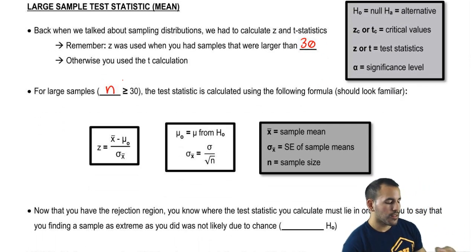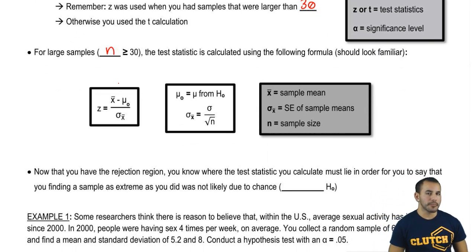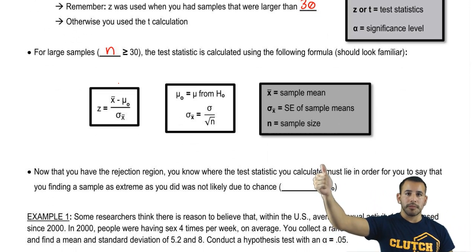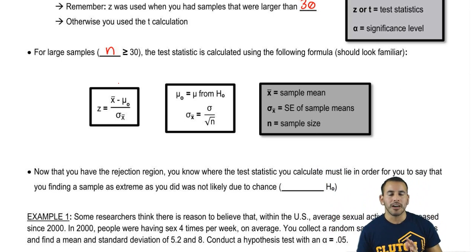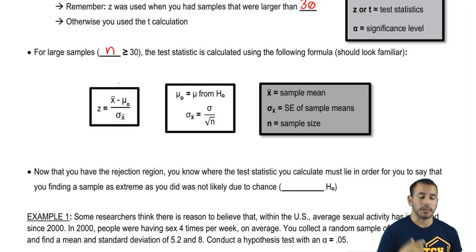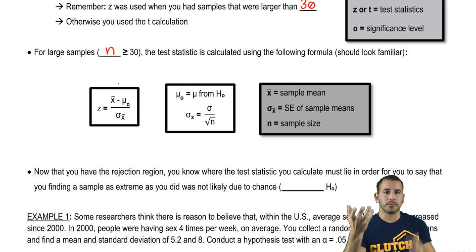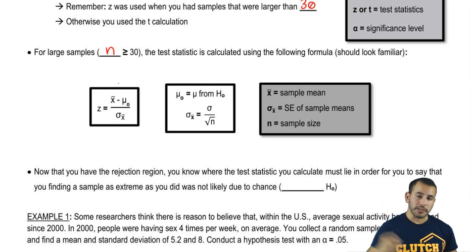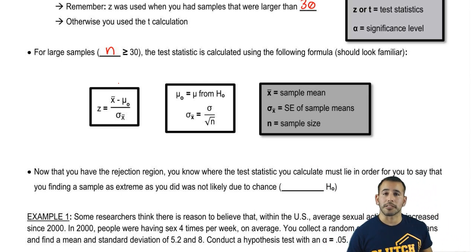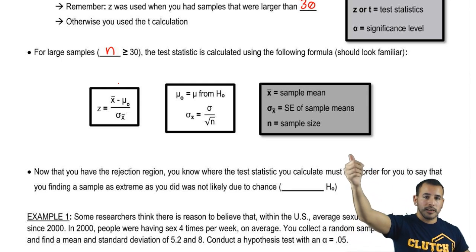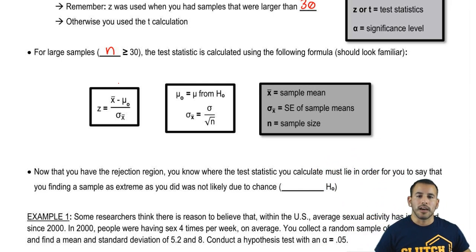For samples that are larger than or equal to 30, the test statistic is calculated using the following formula. So here we have z which is just the sample mean minus the mean. So you see that μ with a little zero there? That μ naught comes from my null hypothesis, and then divided by our measure of spread. So the standard error of the mean is the standard deviation divided by square root n. And x̄ is sample mean, n is our sample size.